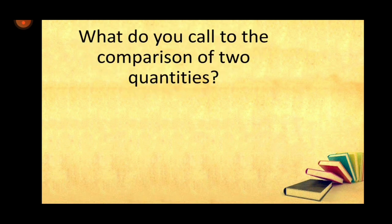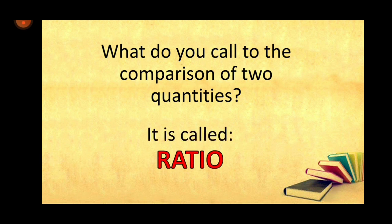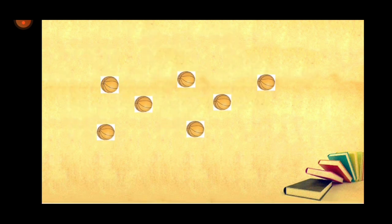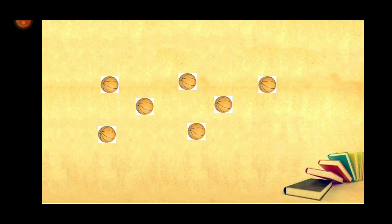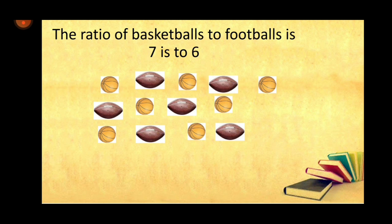So, what do you call the comparison of two quantities? It is called ratio. A ratio is a comparison of two quantities. So let's go back to our example. The ratio of basketball to football is seven is to six.